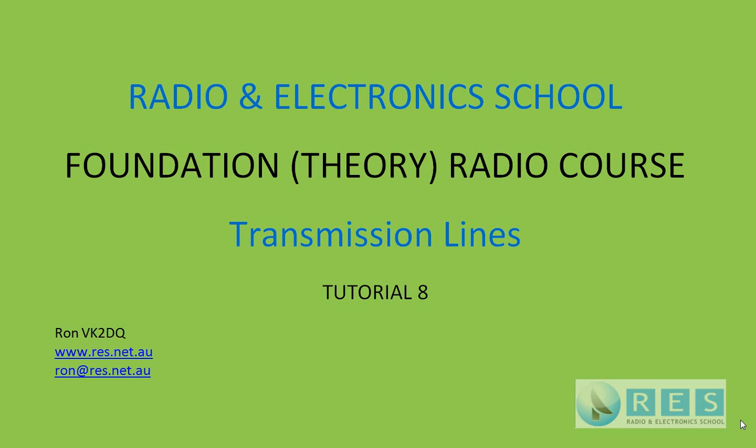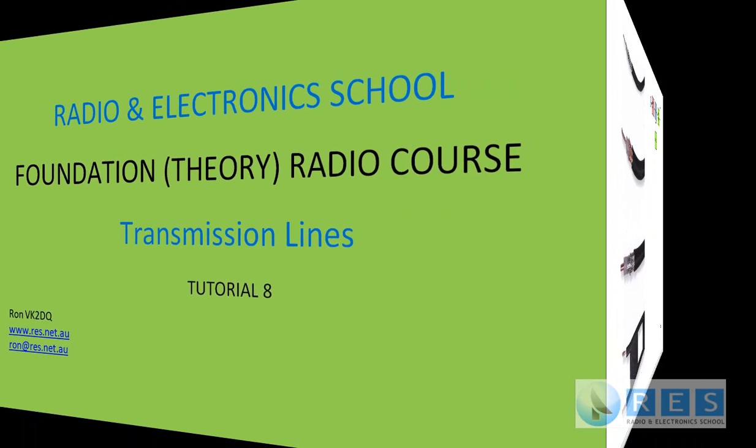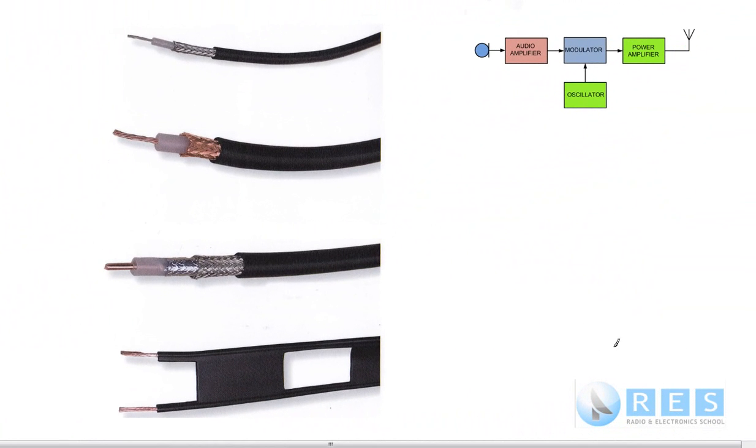Transmission lines connect between your transmitter and your antenna and there are a couple of different types of lines you need to know about. The transmission line is here. The way you connect the output of your transmitter to the antenna is with a transmission line. The purpose of a transmission line is to transfer all of the power from the transmitter to the antenna with minimum loss.